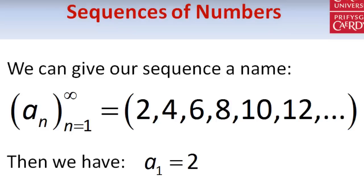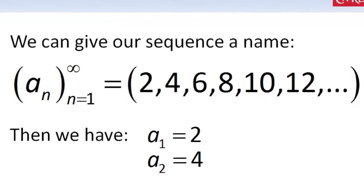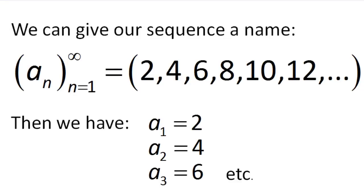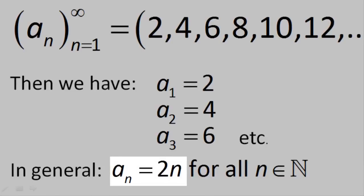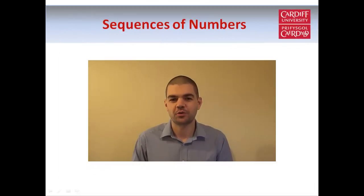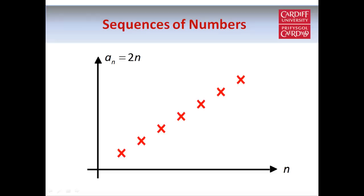So a_1 is the first term in the sequence, and in our example a_1 equals 2, a_2 is the second term and equals 4, and a_3 equals 6, and so on. The general rule for this sequence is a_n equals 2n for any natural number n. Of course we can represent a sequence using a diagram, but remember a sequence is not the same as a continuous function, so the terms should be plotted as separate points rather than joined up continuously. Here's a diagram of the sequence a_n equals 2n.